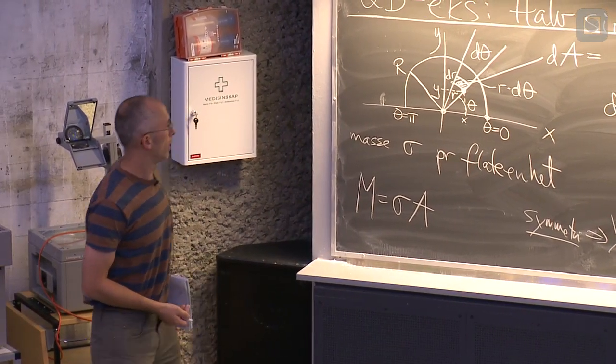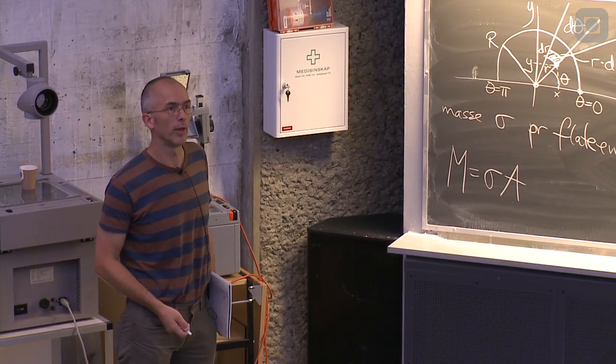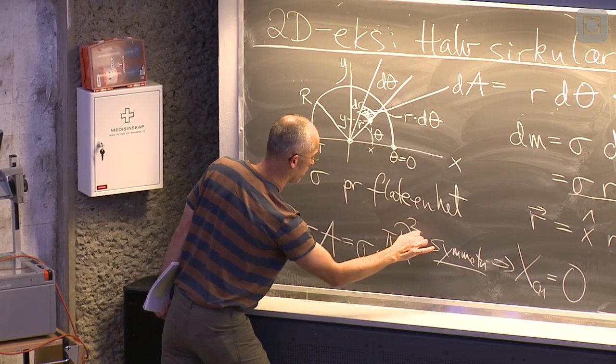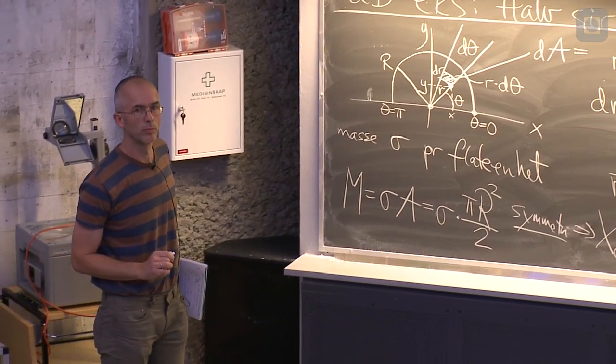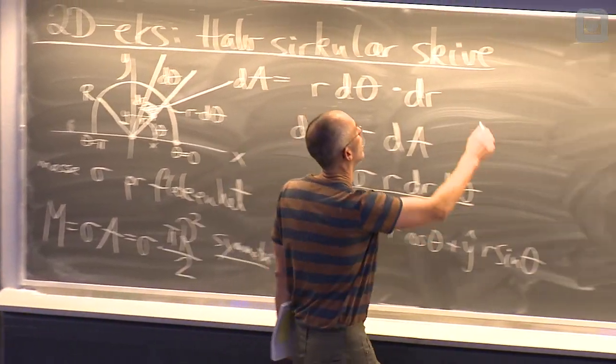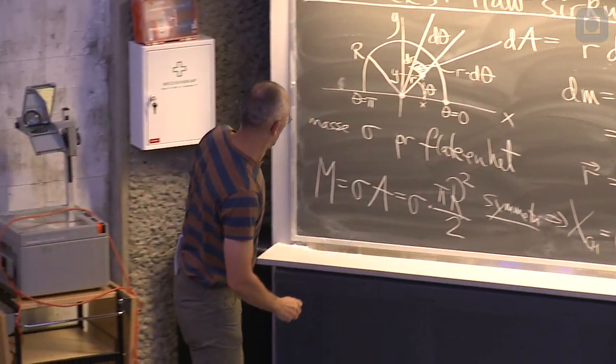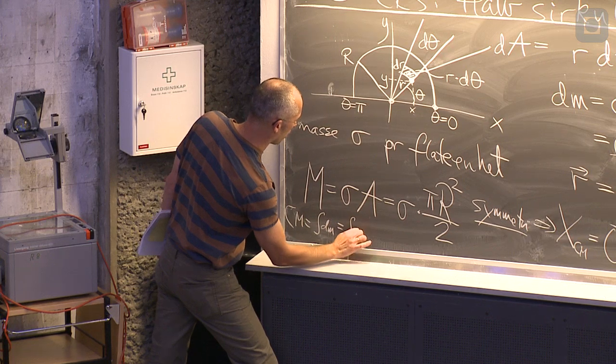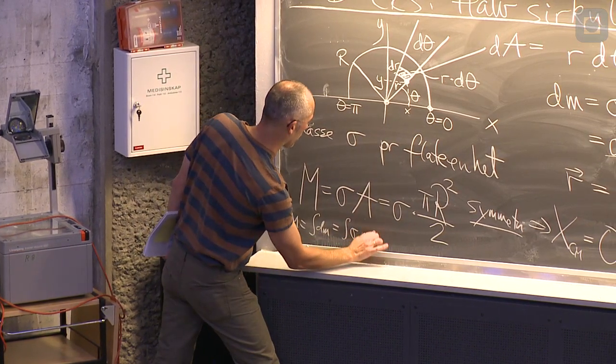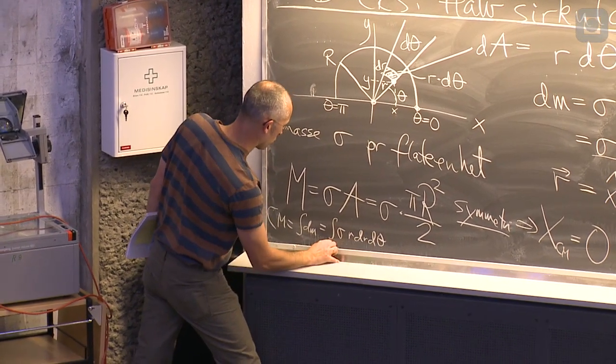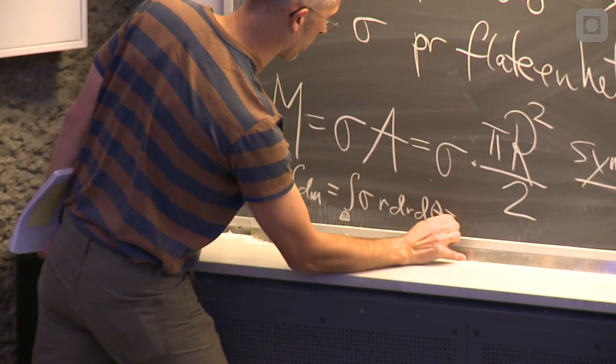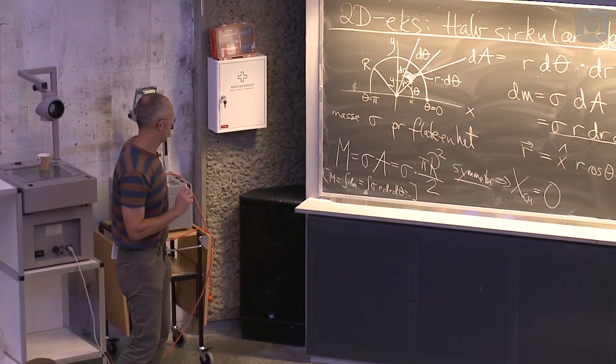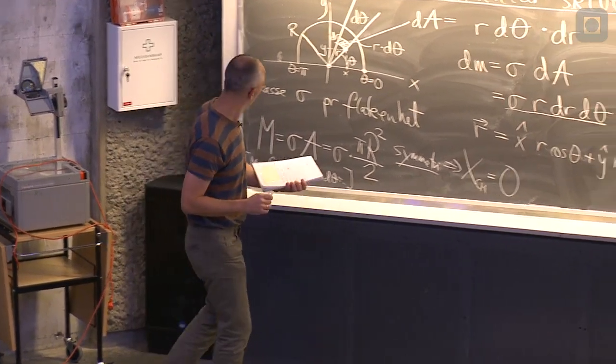Det kan du jo sjekke. Men arealet av en sirkulær skive, det håper jeg flere enn meg husker. Det er pi r i annen. Her har vi halvparten, så vi får dele på to. Så altså m, det er integralet av dm. Det vil si integralet av sigma r dr d theta integrert over en halv skive. Det kan du gjøre selv. Og det får du til etter at vi har løst integralet i telleren, som er nesten det samme, men litt, ja, nesten det samme. Litt mer komplisert.